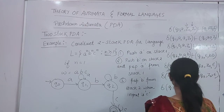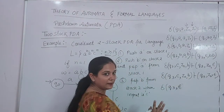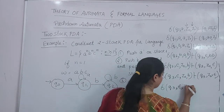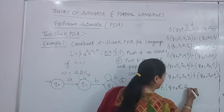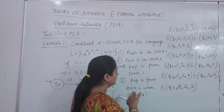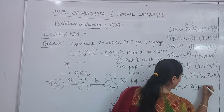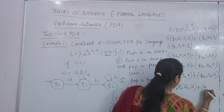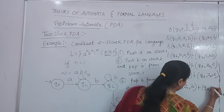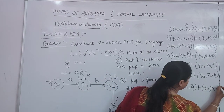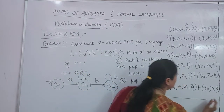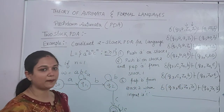At state Q3 with the same input C, Z0 on stack 1 and B on stack 2, we keep stack 1 as it is and keep popping stack 2 symbols. Once we are done with the string, nothing is left — no A, no B, no C — and we have Z0 as the top of both stacks. So we create the final state Q4 with Z0 and Z0.